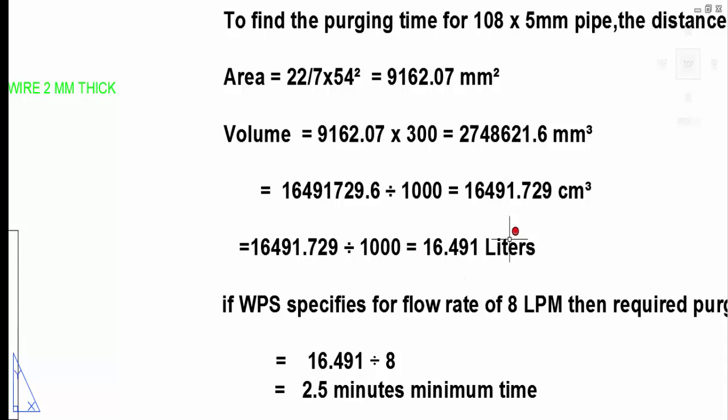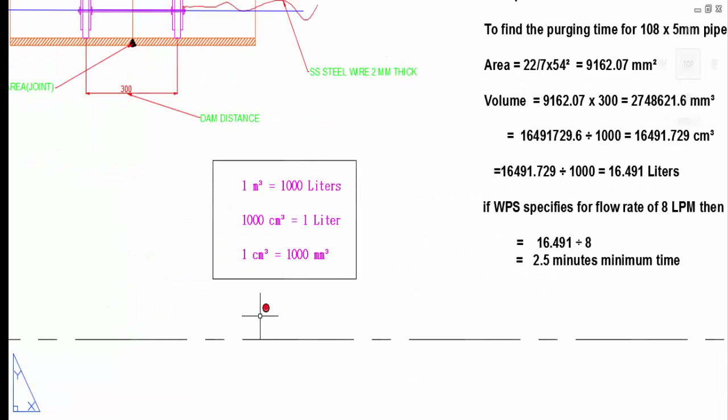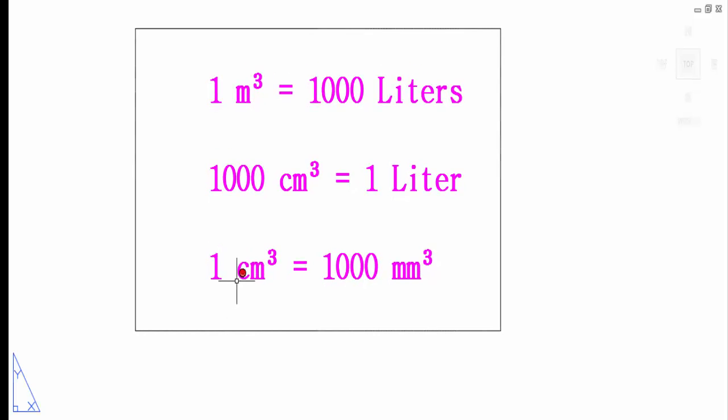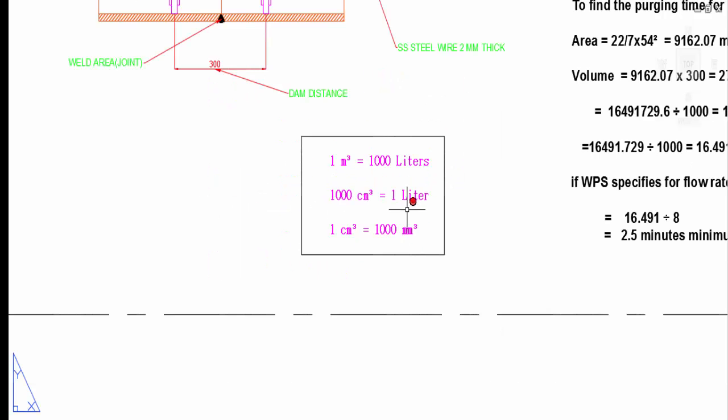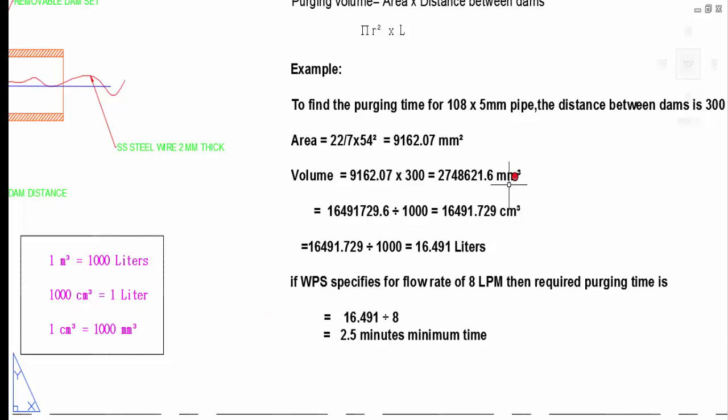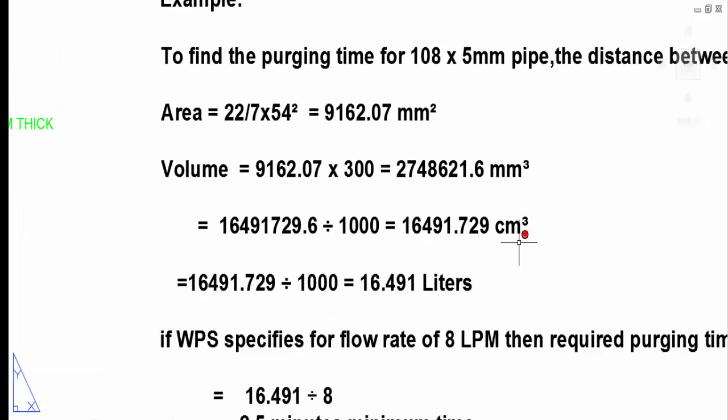For conversion, one centimeter cubed equals 1000 mm cubed. 1000 cm cubed equals one liter. So mm cubed we have to convert to centimeter cubed, so divide by 1000.